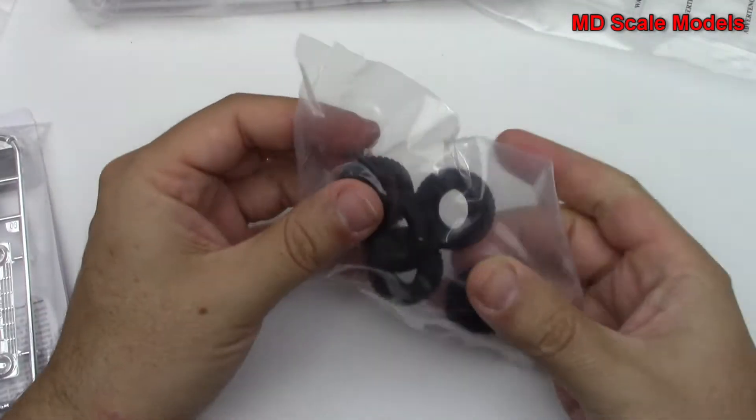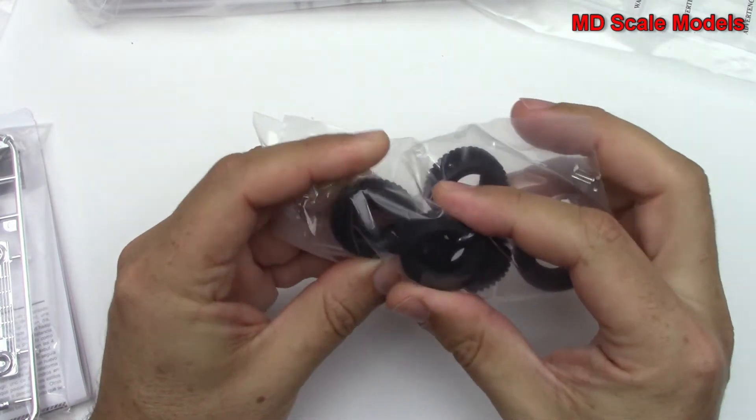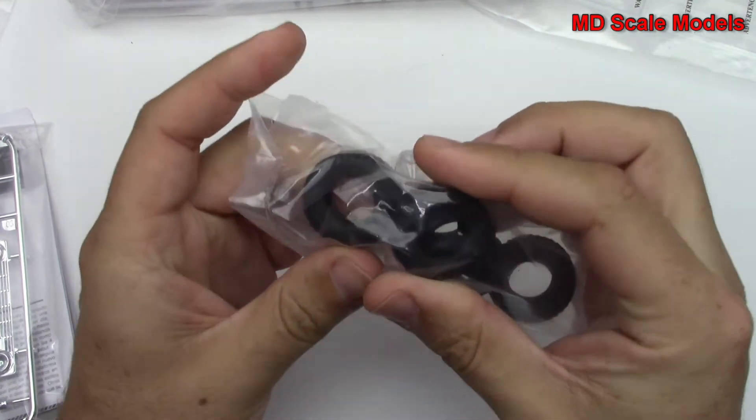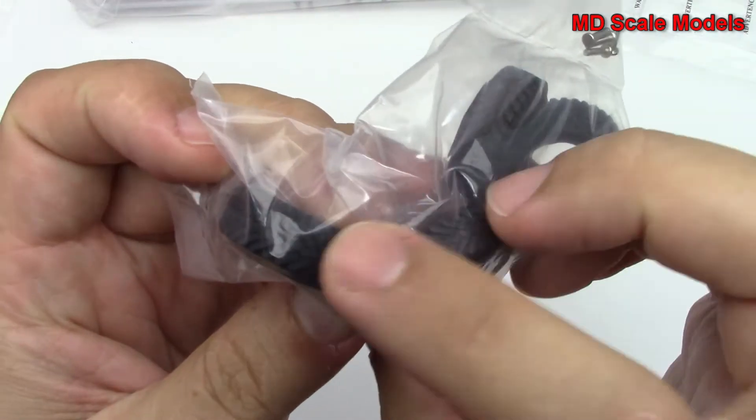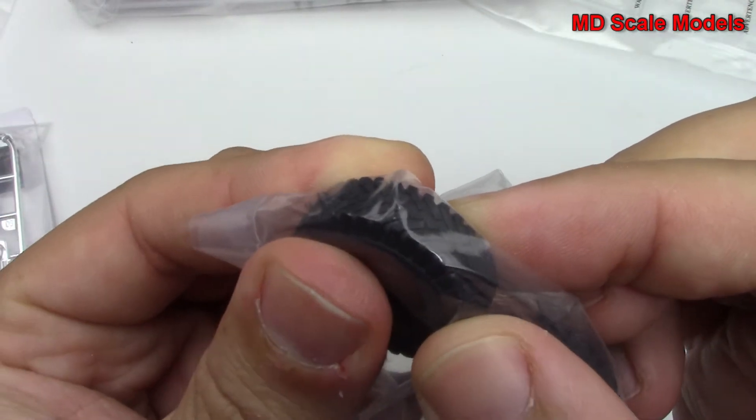Let's have a look here. We've got our tires and these are pretty stiff vinyl but they've got some nice tread on them, as you can see there.